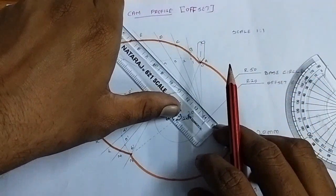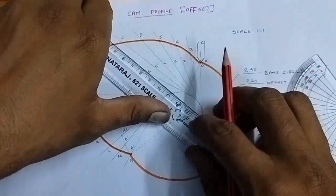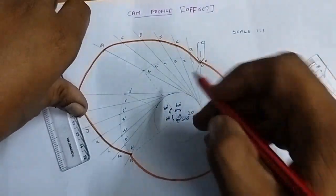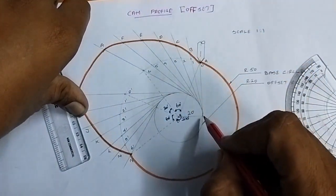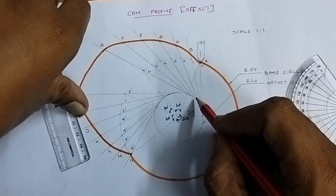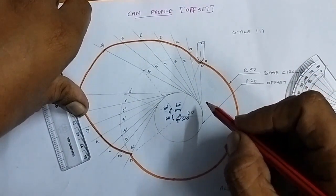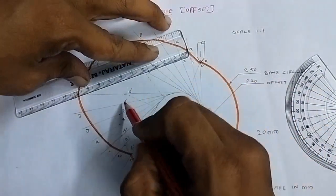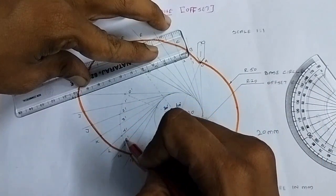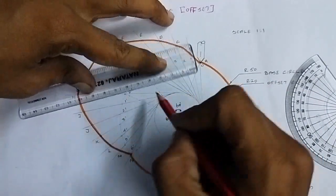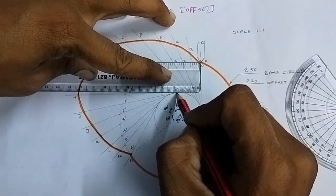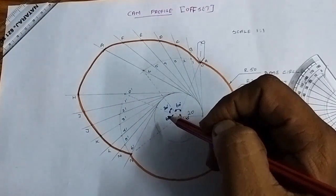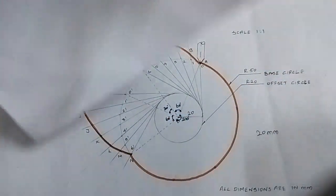Draw lines from the cam center through each angular division. Where these lines intersect the offset circle, draw tangent lines — the follower lies along these tangents. The offset circle touch points define the follower positions. For the return stroke angles 0 through 6, all points are marked on the base circle. Connect the offset circle touch points using the displacement values.